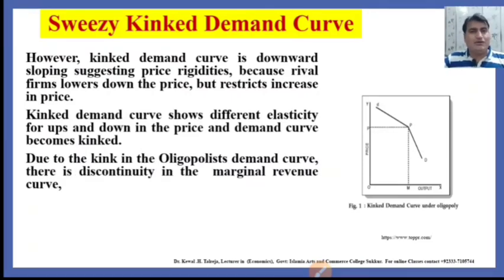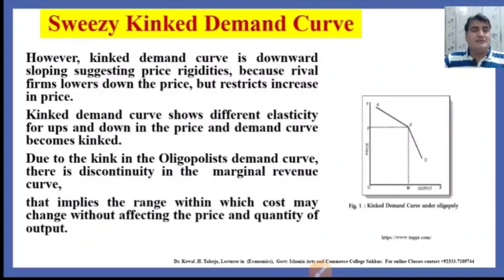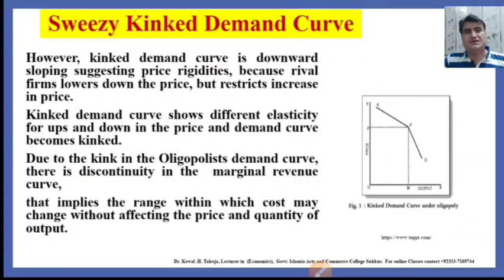Due to the kink in the oligopolist's demand curve, there is a discontinuity in the marginal revenue curve. This implies a range within which cost may change without affecting the price and quantity of output.